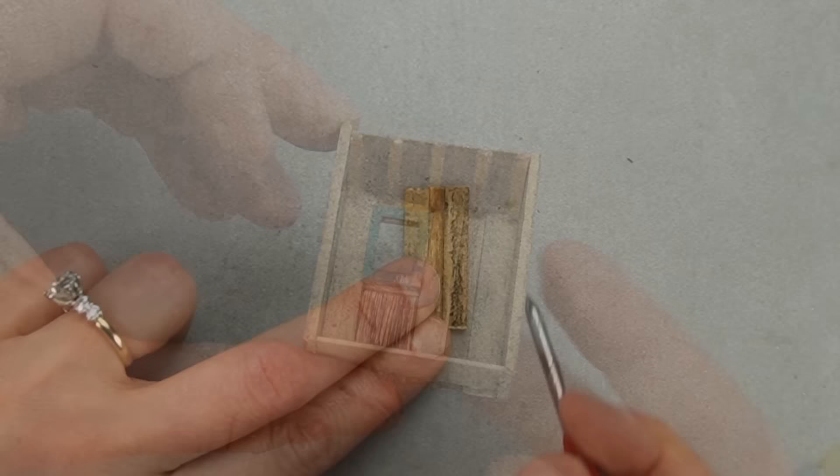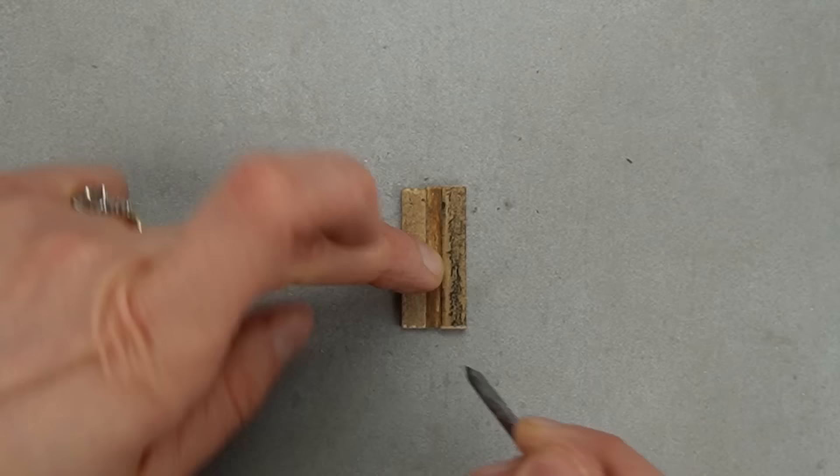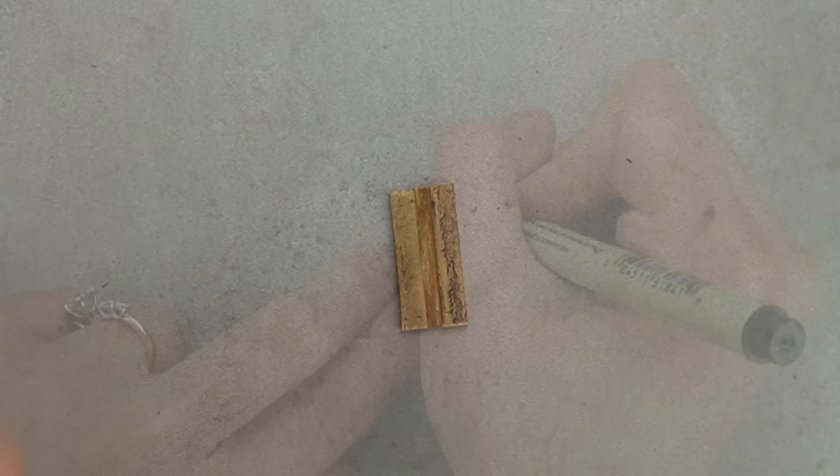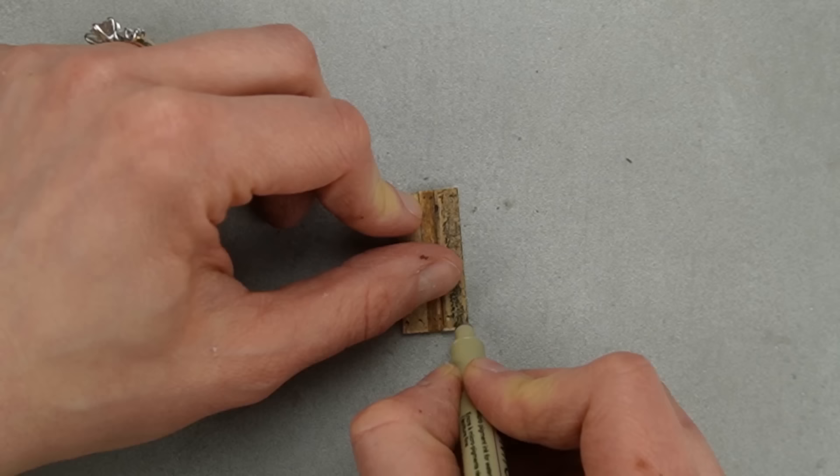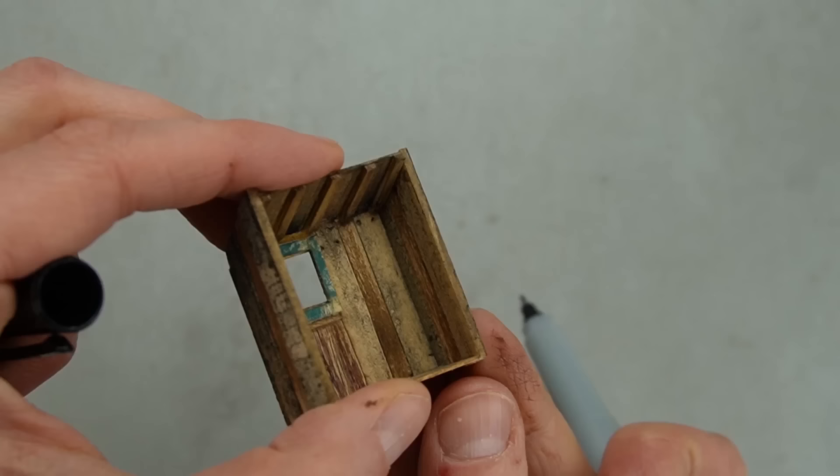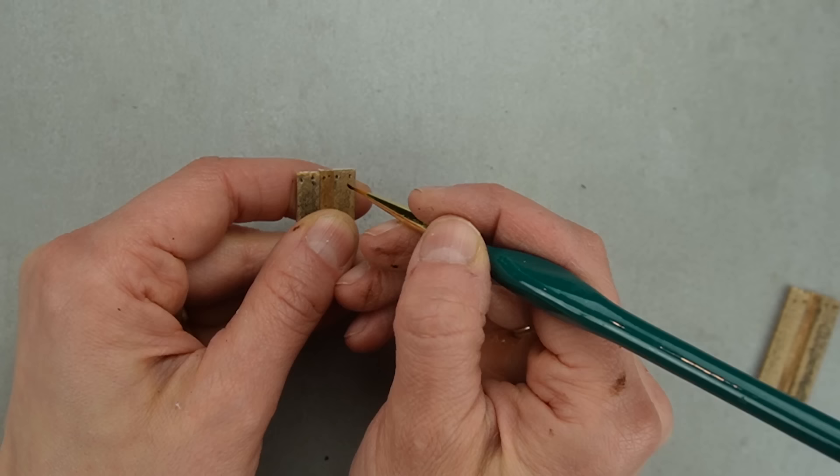To add a bit of character to the doors, I'm using a pointy tool to make some holes where old nails might be. The holes are pretty hard to see, so I'm filling them with some black marker. I added some nail holes to the other door as well and inside of the shed. I'm using some rust effects to make little rust strips from each of the nails.